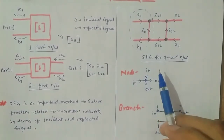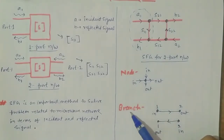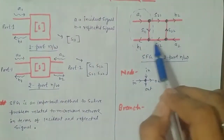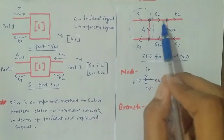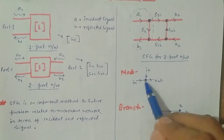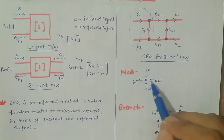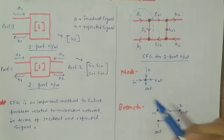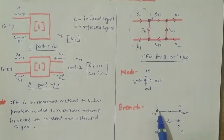Now there are two important concepts in the signal flow graph: one is called a node and another is called a branch. The blue dots you see here all represent nodes. The connection from one node to another is called a branch. A node can have any number of incoming signals and any number of outgoing signals. A branch is the connection between two nodes, and its direction shows the flow of the signal.